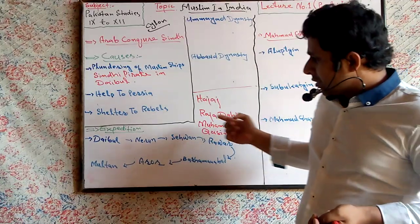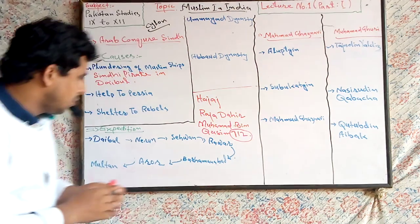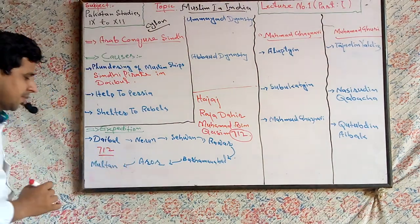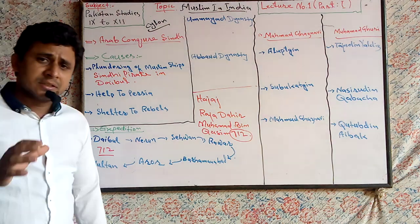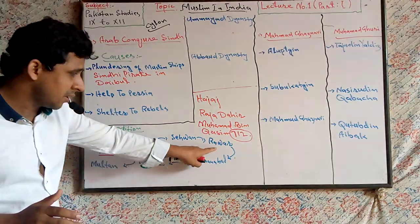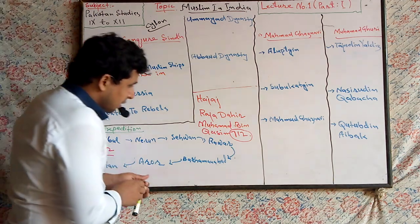Muhammad bin Qasim first reached Debil. So in 712, he conquered it. It was the first success of Arabs. And then Neiron, Sehwan, Raver, Brahmanabad, Alror, and Multan.